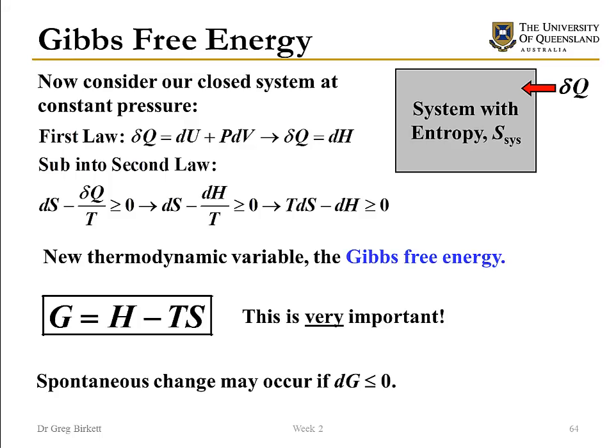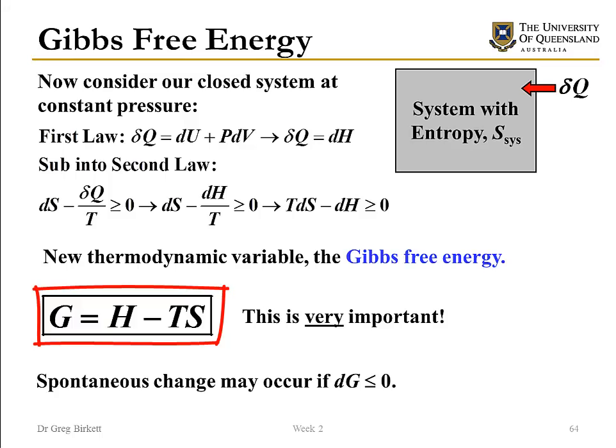Similarly, we can look at a system that's at a fixed pressure as opposed to a fixed volume. If we go back to the first law, our heat addition becomes equal to dH. Substituting that back into the entropy balance for the universe, our criterion becomes T dS minus dH is greater than zero. This leads to a new thermodynamic variable, the Gibbs free energy, which is H minus TS. This is very important — we'll be using the Gibbs free energy for the rest of the course. The criterion for spontaneous change is that the change in Gibbs free energy is less than zero, i.e. negative.